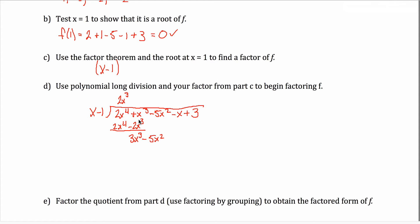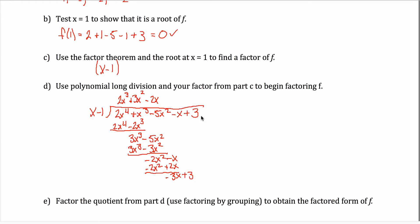Now I repeat. To eliminate 3x³, I put 3x² up top. 3x² times x gives 3x³, and 3x² times −1 gives −3x². Subtracting: these cancel, and −5 minus −3 equals −5 + 3 = −2x². Bringing down the −x, I now need to eliminate −2x², so I place −2x up top. −2x times x gives −2x², and −2x times −1 gives +2x. Subtracting: that column cancels, and −1x − 2x gives −3x. Bring down the +3.